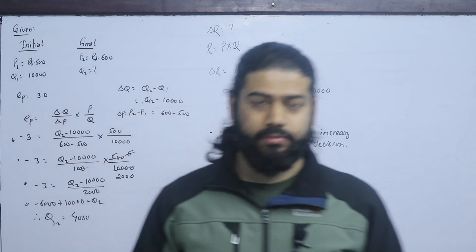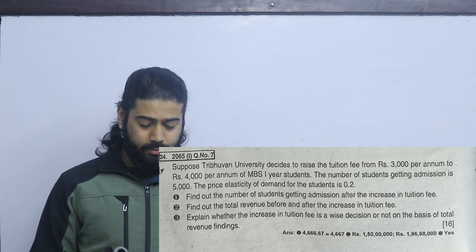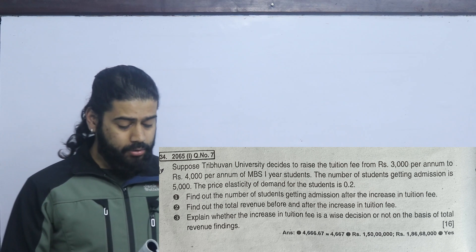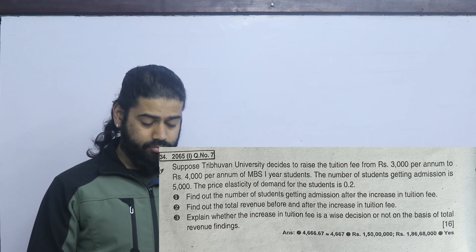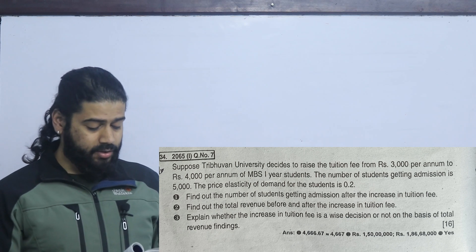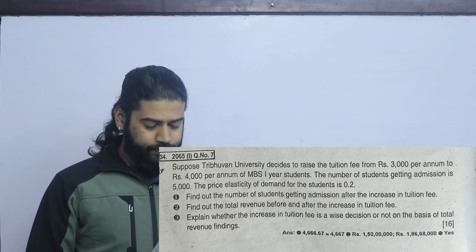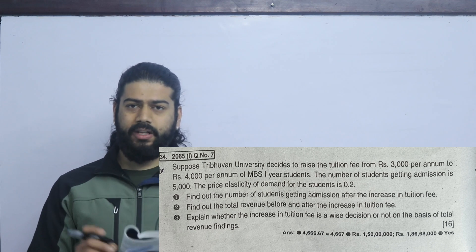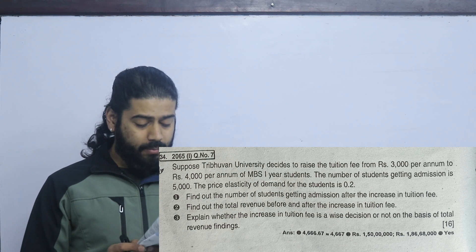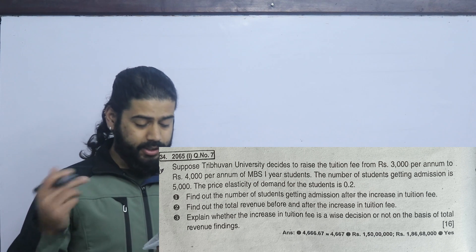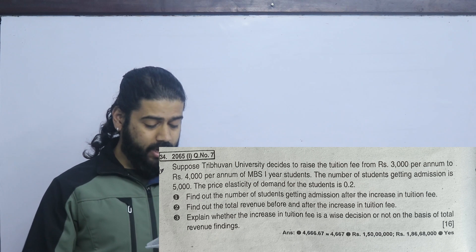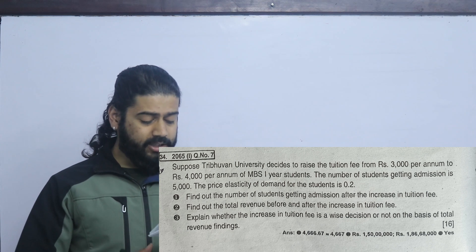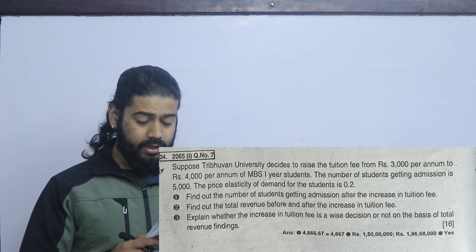This is another question. Suppose a university decided to raise the tuition fee from Rs. 3,000 per annum to Rs. 4,000 per annum for MBS first year students. The number of students getting admission is 500. The price elasticity of demand for students is 0.2. Find the number of students getting admission after the increase in tuition fee, and find total revenue before and after.